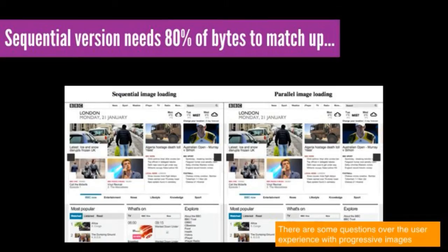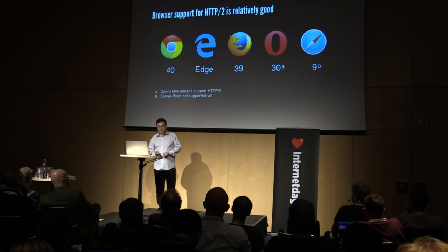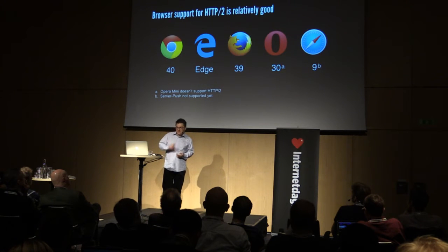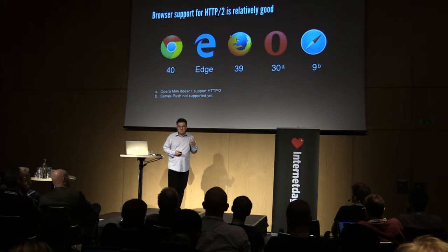There are some questions over progressive images — this study used progressive JPEGs, and there are questions about how well people like them. But the real hypothesis we need to answer is: is a faster user experience better than some of the drawbacks people feel they have with progressive images? Browser support right now is pretty good: Chrome supports it, Firefox supports it, Edge supports it. Safari 9 supports it without server push.